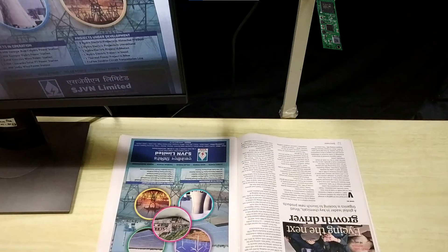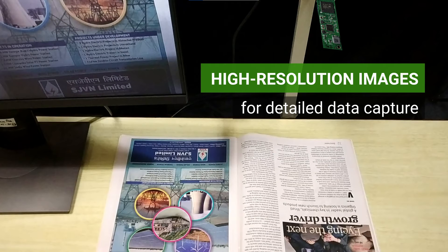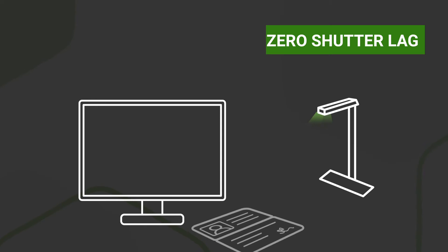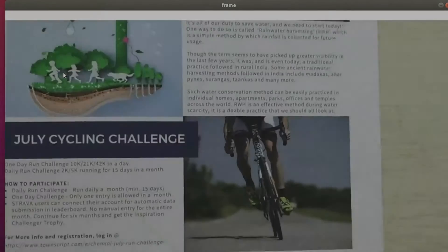C3Cam 160 is designed to provide high-resolution images for detailed data capture and extraction in document scanners. This camera comes with zero shutter delay that captures high-resolution still images without any deviation from the intended target scene.